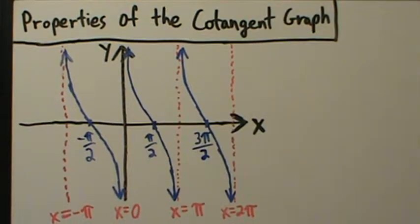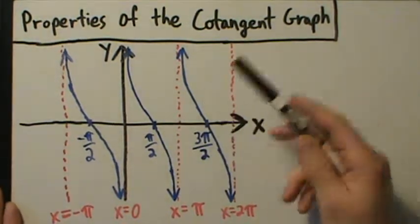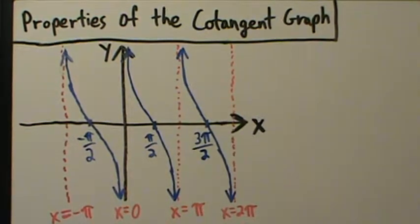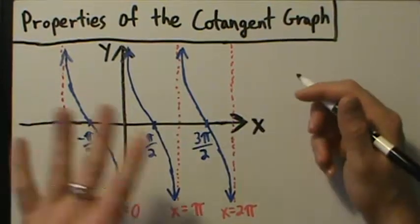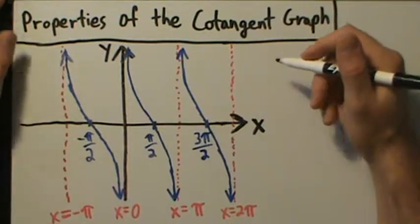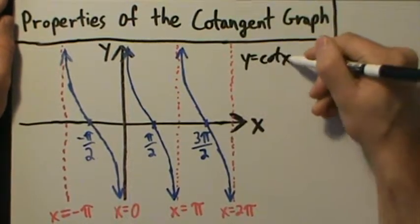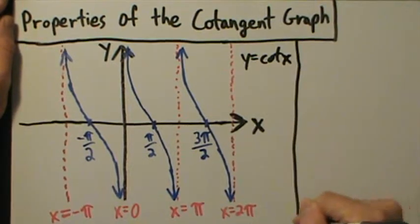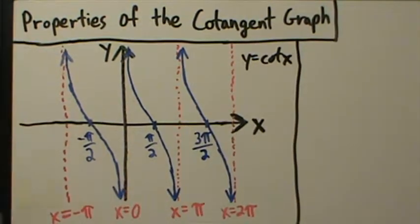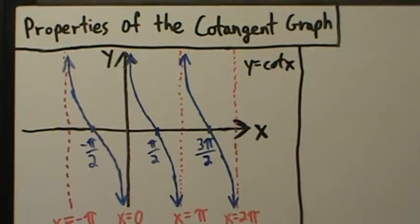In this video we're going to talk about the properties of the cotangent graph. In the last video we saw how to get the graph of the cotangent function just from transformations of the graph of the tangent function. We shifted it a little bit and then flipped it upside down, or reflected over the y-axis, which happened to kind of be the same thing. So this is y equals cotangent of x.